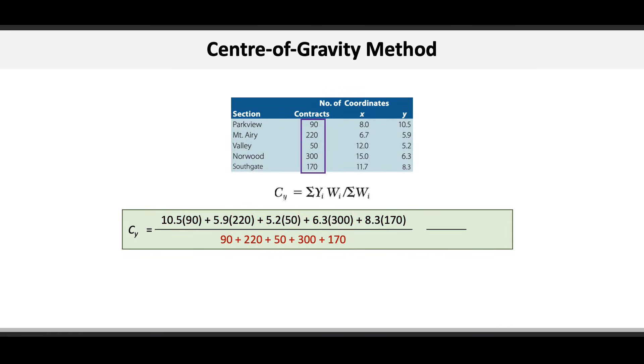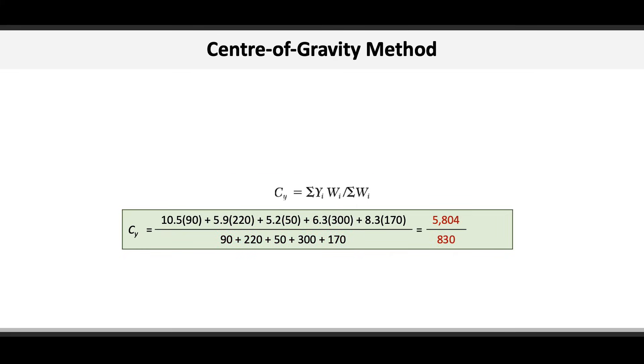For the denominator, we use the same numbers as in the denominator for the x coordinate, which are the individual weights of 90, plus 220, plus 50, plus 300, plus 170. If we finish out the math, we get 5,804 divided by 830, and a y coordinate of 6.99.